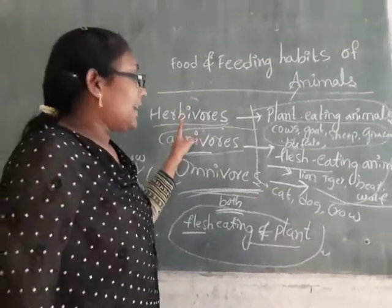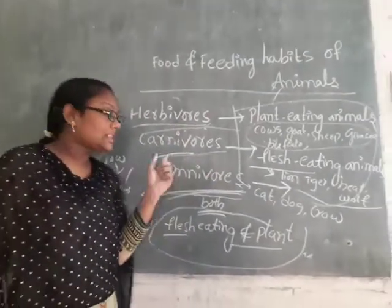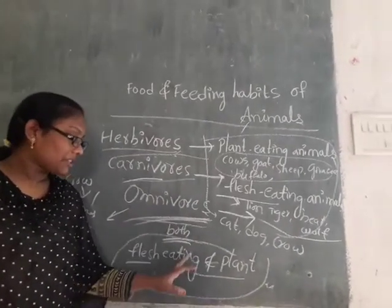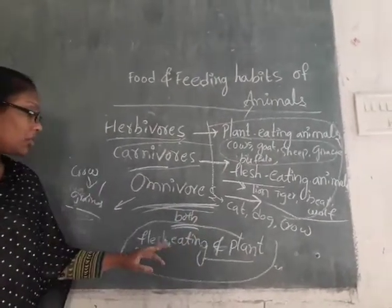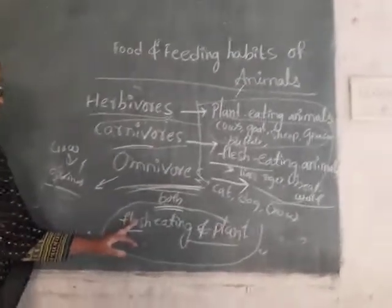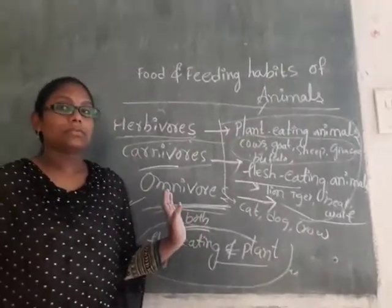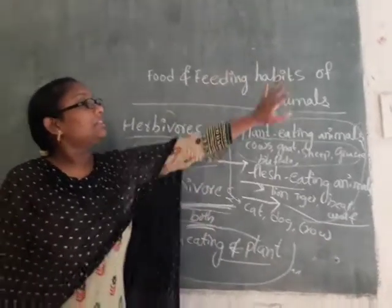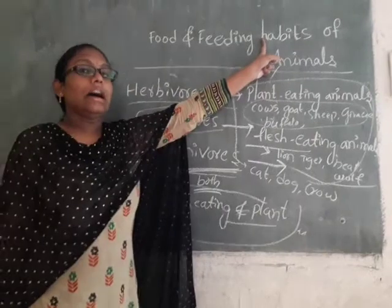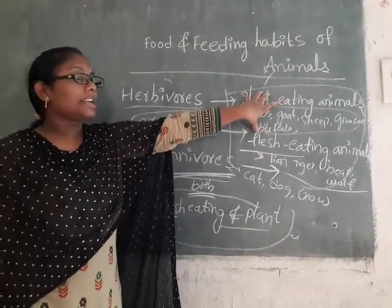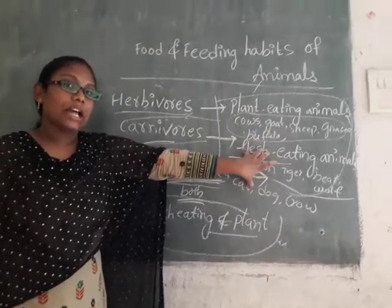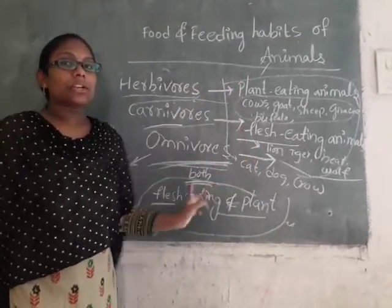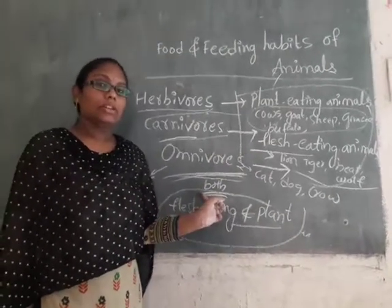Only plant-eating animals are called herbivores. Only flesh-eating animals are called carnivores. Both plant-eating and flesh-eating animals are called omnivores. Examples of omnivores: crows, dogs, bears. We have understood the food and feeding habits of animals. All animals need food for energy and to grow. Plant-eating animals are herbivores, flesh-eating animals are carnivores, and both are omnivores. Thank you.